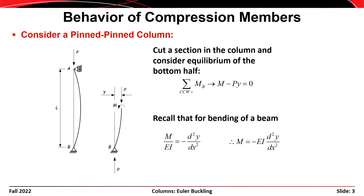Here y is the amount of lateral displacement of the deformed shape of the column at any point along the length x. Recall from your analysis class that when we have bending of a member, M over EI is equal to the second derivative of y with respect to x — it's equal to minus d²y/dx². Therefore we can write that M is equal to minus EI times d²y/dx².